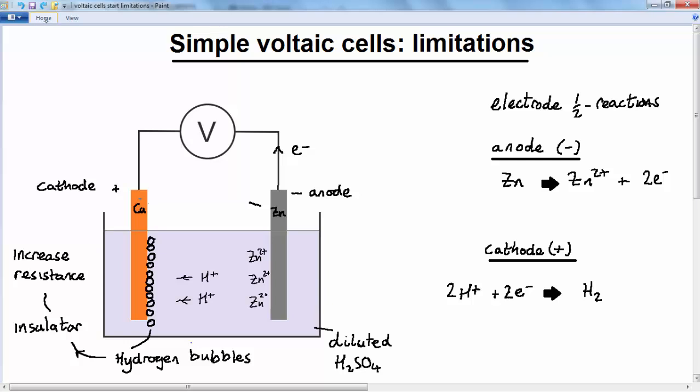But there's another problem. Our hydrogen ions are pushed towards this layer of hydrogen bubbles by the zinc ions on the negative anode, but they are unable to get in contact with the copper cathode to receive an electron in order to be reduced.